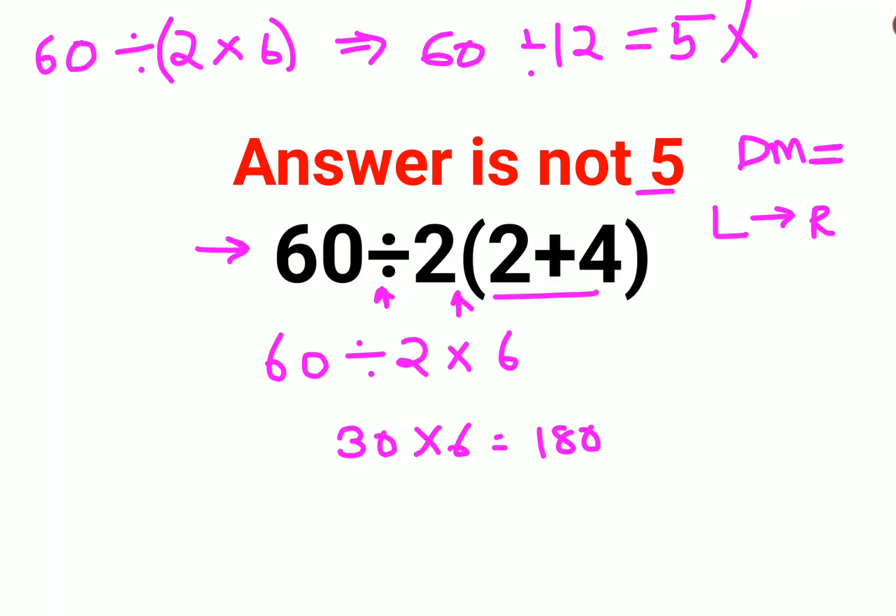If there was an additional bracket, then according to BODMAS or PEMDAS, you'd first finish the bracket. So then you will do 60 divided by 2 into 6 has to be done first, which is 12, and then you would have done the entire operation. At that time the answer comes out to be 5, which is absolutely correct. But for this particular question, the answer will be 180.